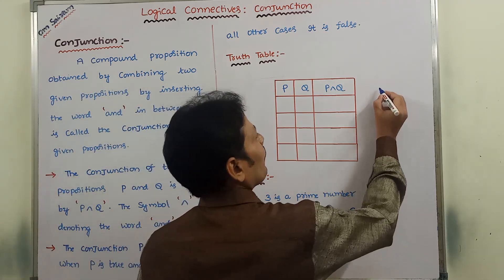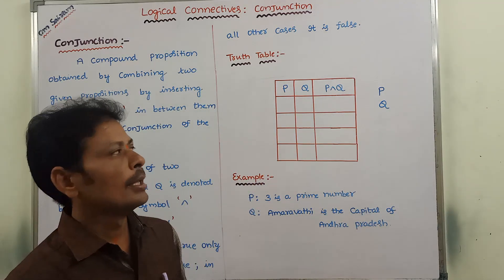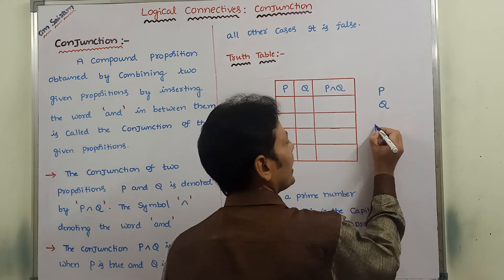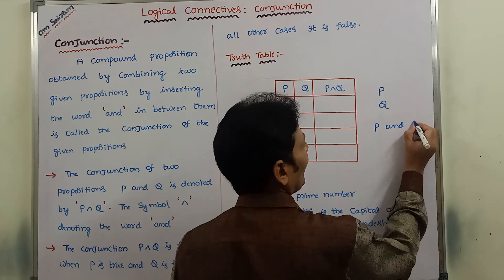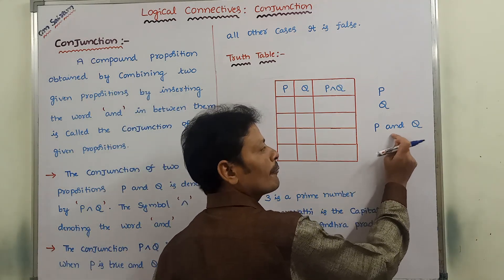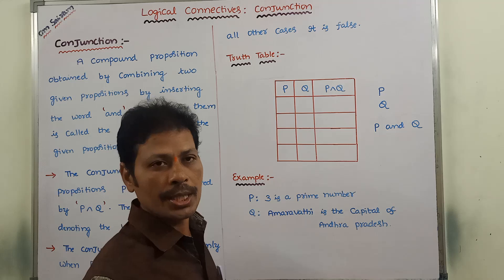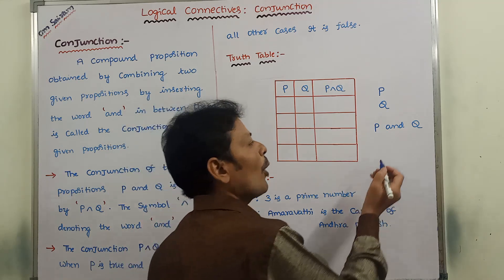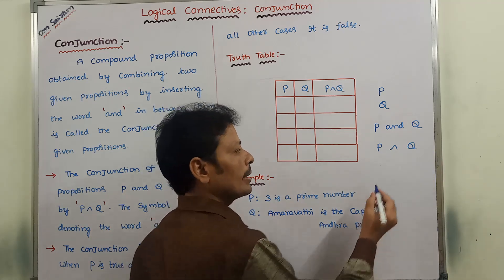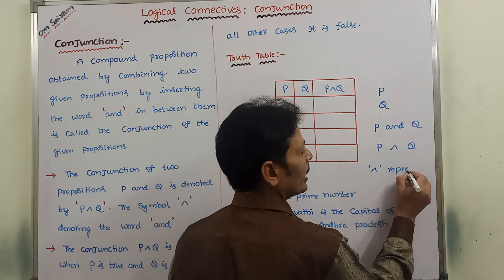Let us consider P and Q are two propositions. The conjunction of these two propositions can be denoted as P and Q. We use the 'and' connective for combining these two propositions. Symbolically, it can be represented as P ∧ Q, where this symbol represents the word 'and'.